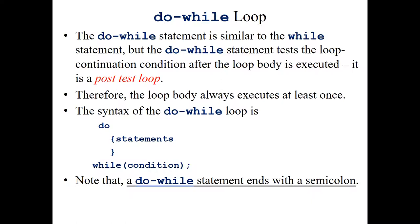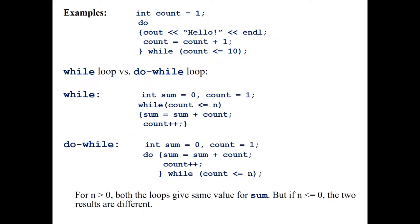The do-while loop is exactly similar to the while loop, except it is a post-test loop. The syntax is: do { statements } while (condition); — while comes after the body. This means the body always executes at least once before the condition is tested. Note that the do-while statement ends with a semicolon after the while condition, unlike the while loop which has no semicolon there.